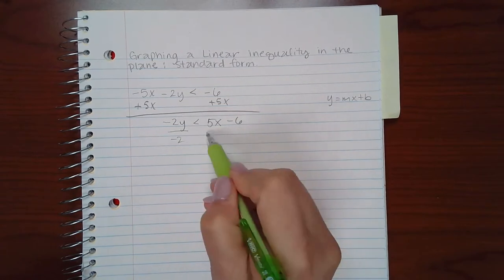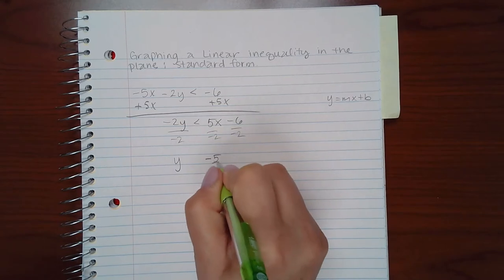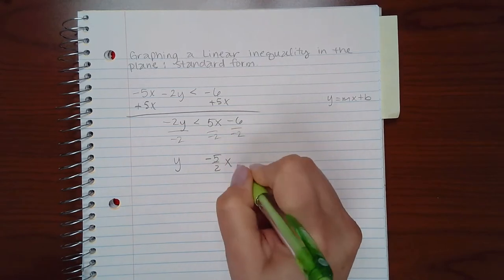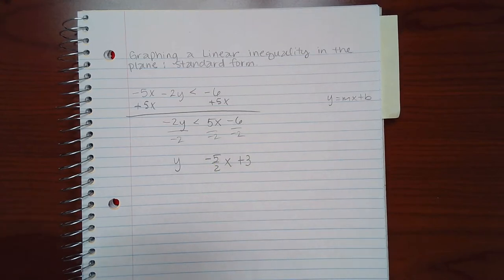Which means I'm going to divide everything by negative 2. When I do that, I'm going to get negative 5 over 2x and here I'm going to get a positive 3.